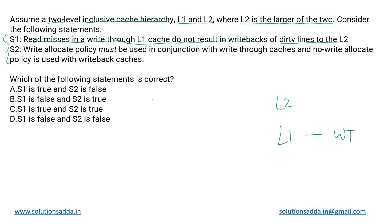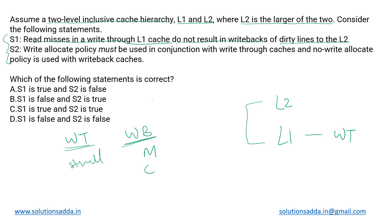First, let us understand all these terminologies — what is write-through and what is write-back. These are the two types of cache. In case of a write-through cache, the data is simultaneously copied to all levels, meaning L1 and L2 are simultaneously updated. In case of a write-back cache, the data is updated in cache only for the time being, while it is updated in memory at a later stage — not simultaneously.